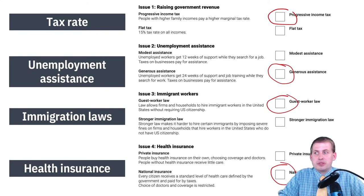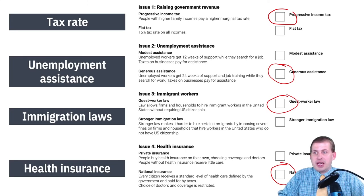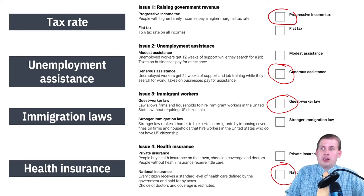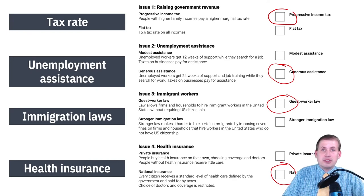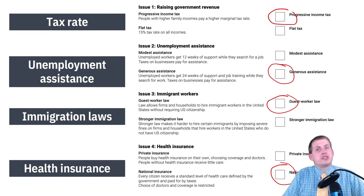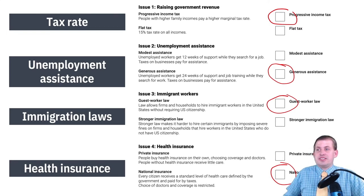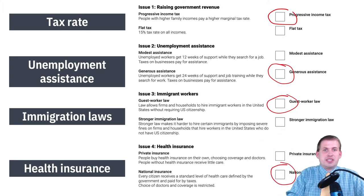The reason that always happens is because they don't know how they're going to end up. You choose the thing most beneficial to you under uncertainty. Having generous unemployment is great because you don't know if you'll be a rich CEO or an unemployed worker who needs that assistance. You want the progressive income tax because you don't know if you'll be a billionaire or just a regular person. So you choose the option that is best for what is most likely to occur.